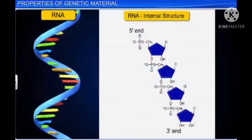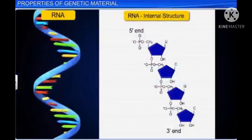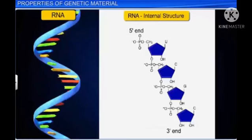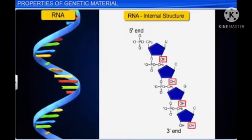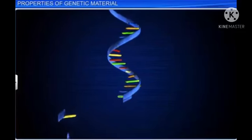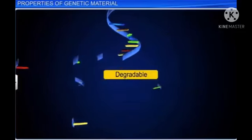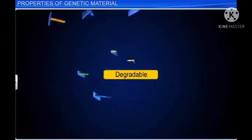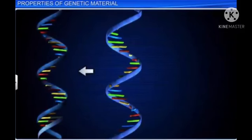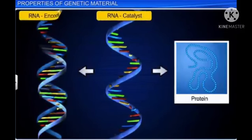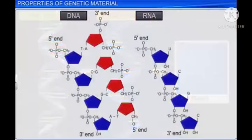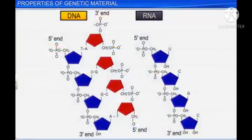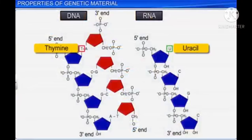RNA on the other hand is much more liable to change due to the presence of the very reactive 2-OH group that is present in its every nucleotide. This makes RNA more degradable and reactive than DNA. Also, it enables RNA to act as a catalyst in several biochemical reactions in living systems. Moreover, DNA has thymine instead of uracil that is present in RNA, which makes it more stable.